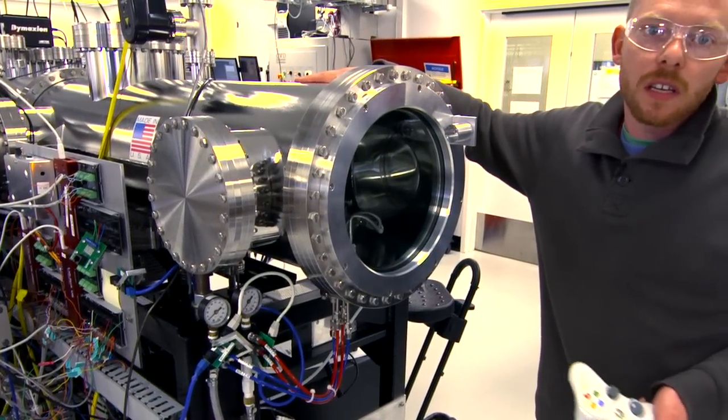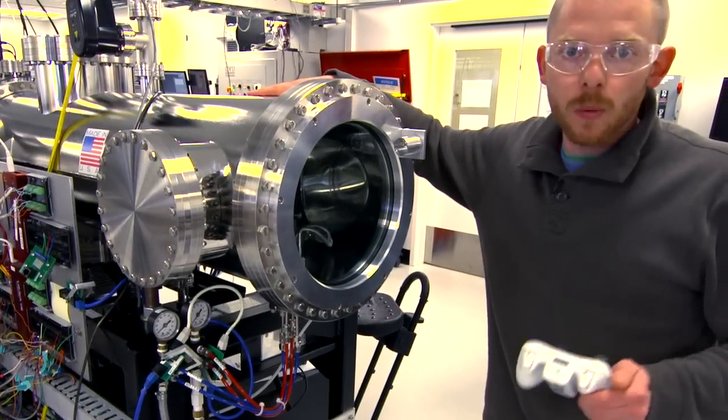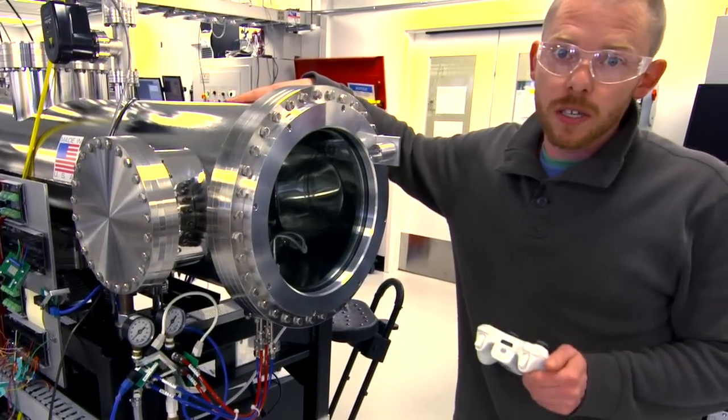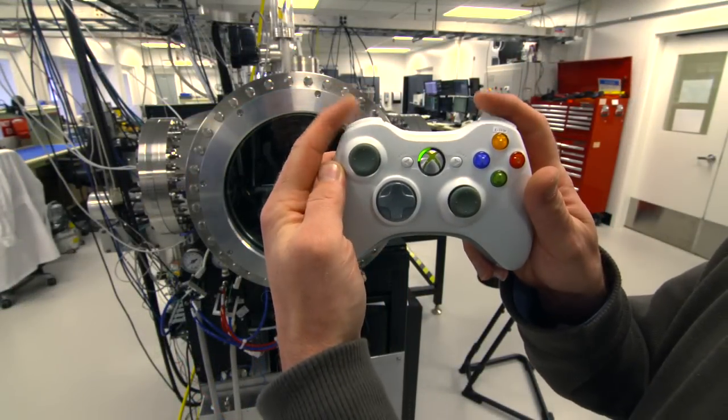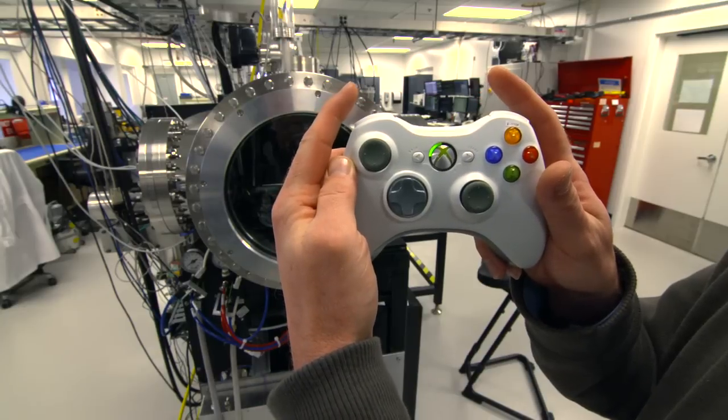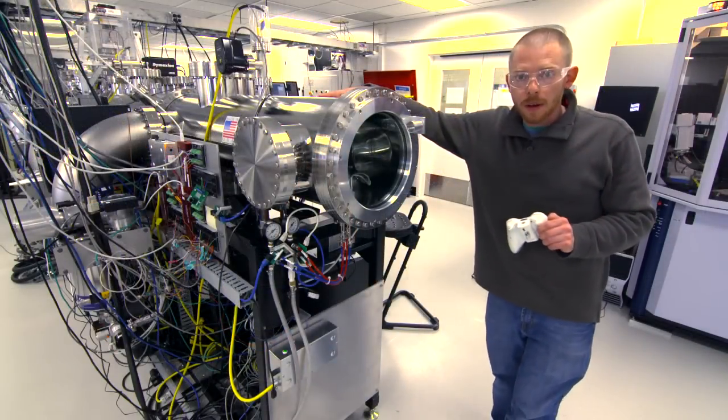So I had asked one of our controls engineers to come up with some way that I can have a joystick, a wireless joystick, so that I can manipulate the transport car back and forth at slow speeds, high speeds, and also even be able to turn on and off cathodes if I wanted to remotely.